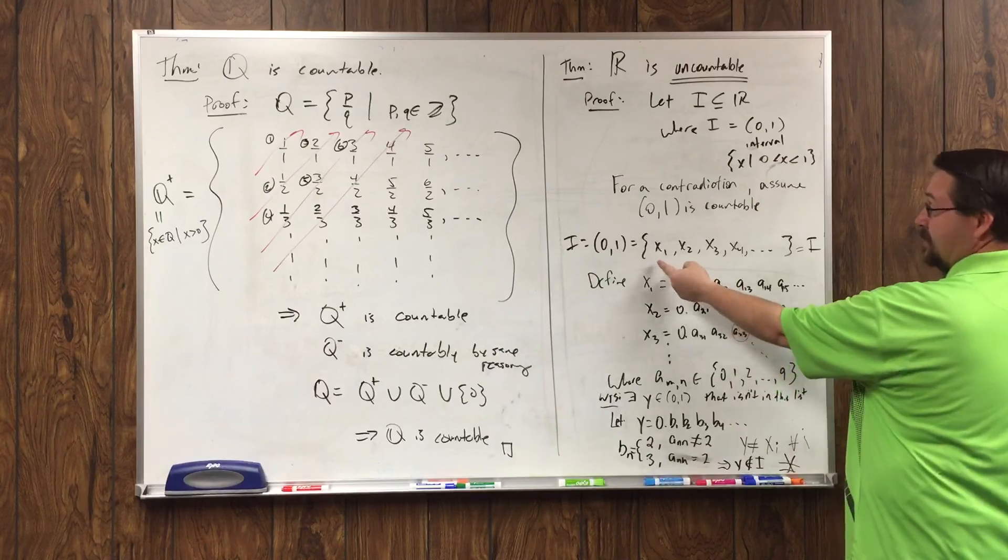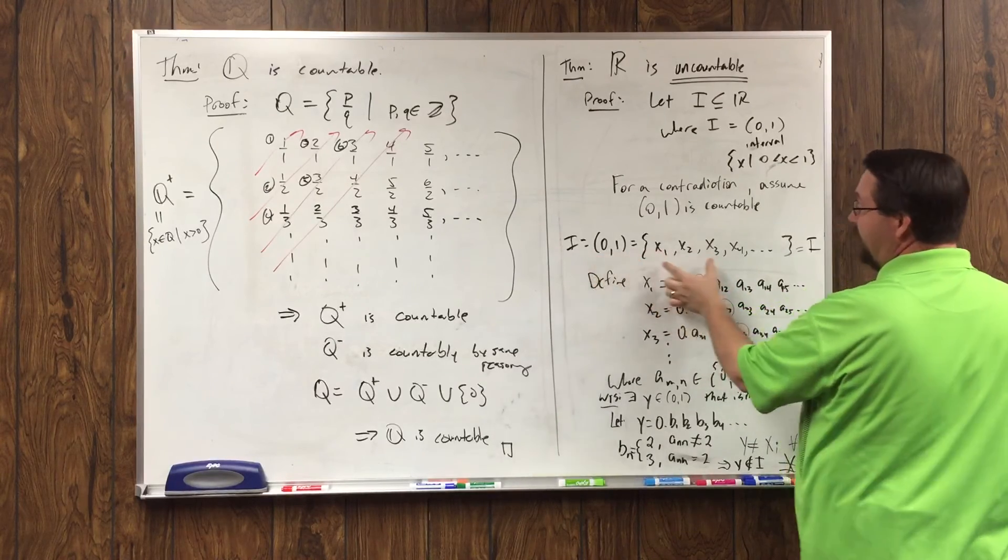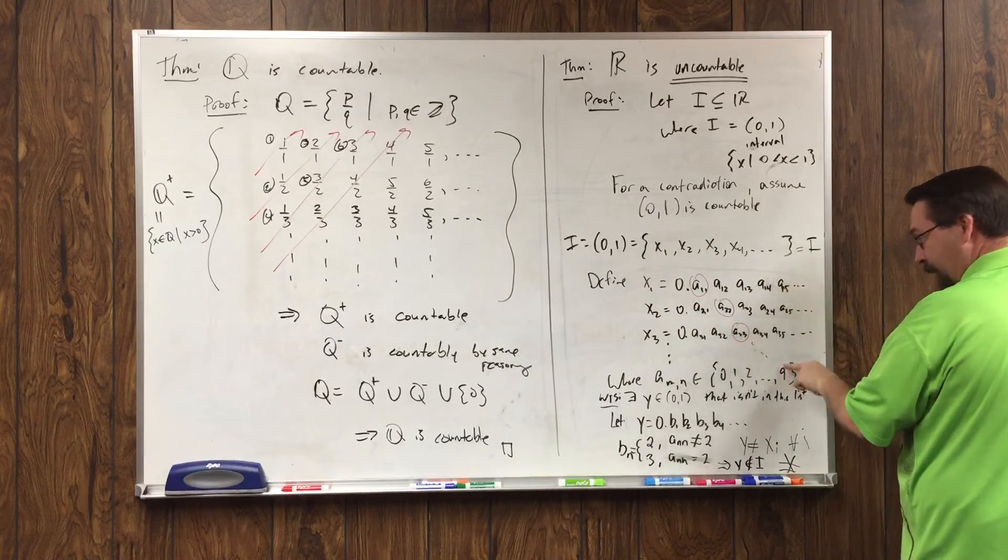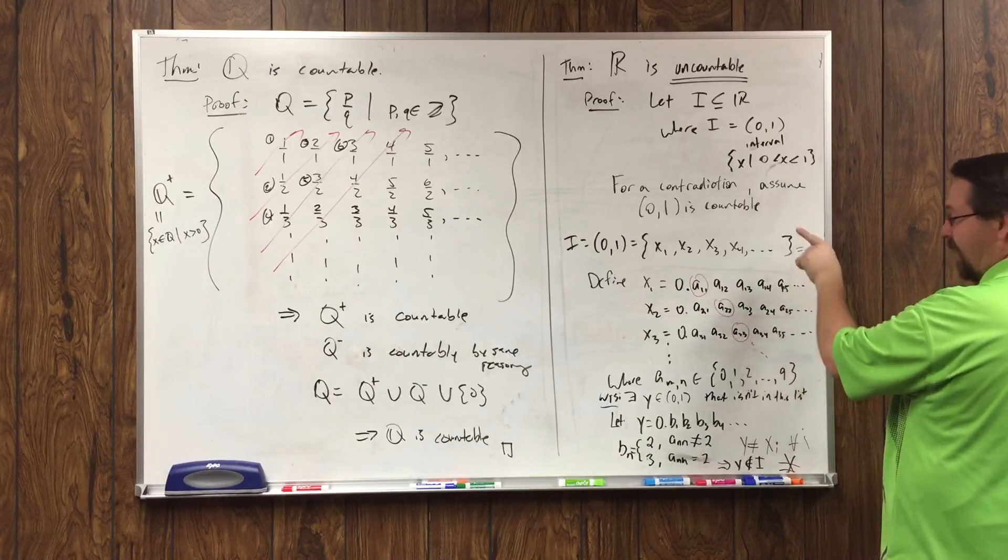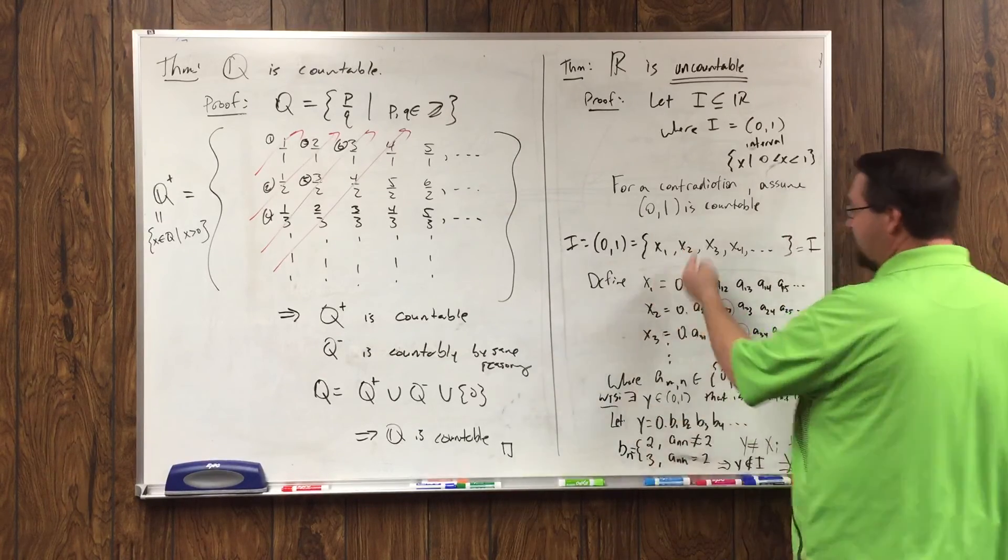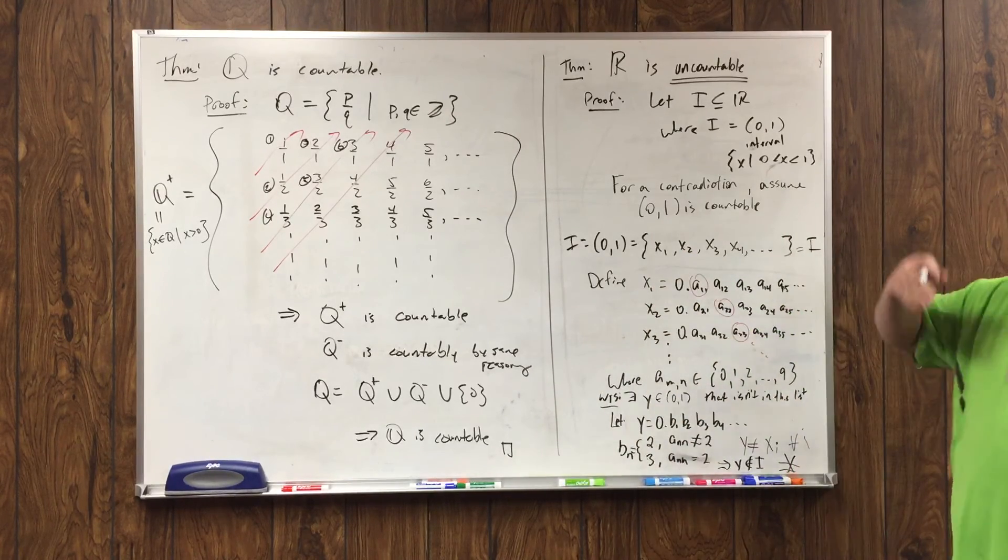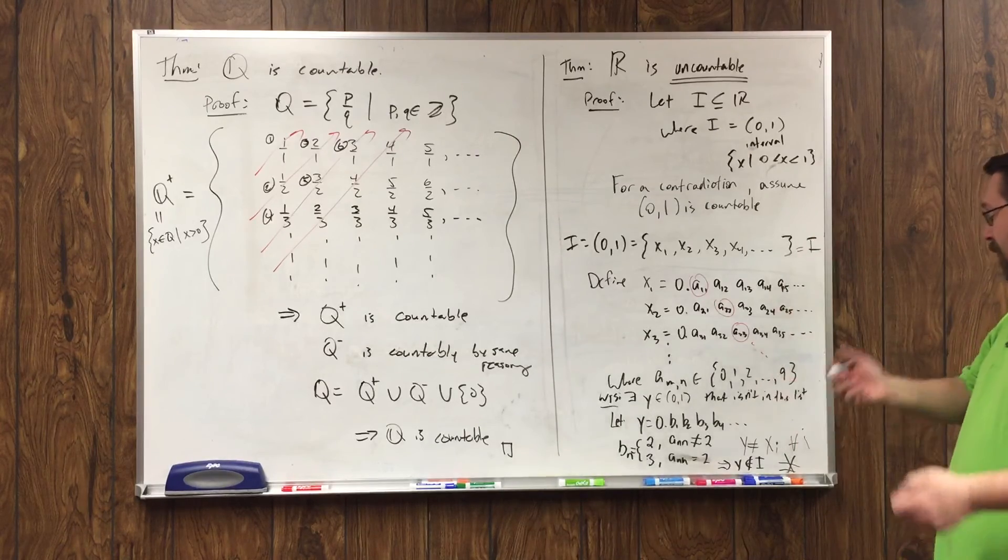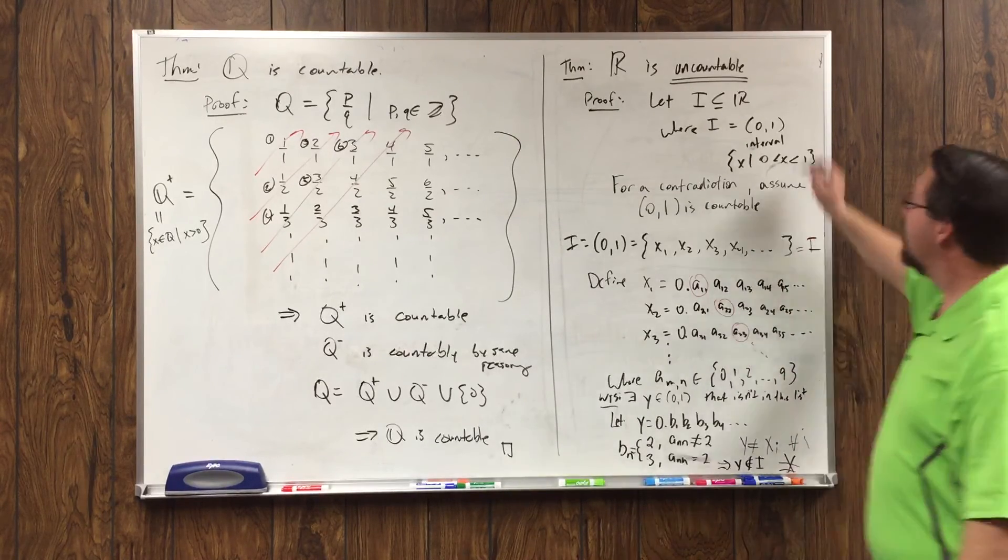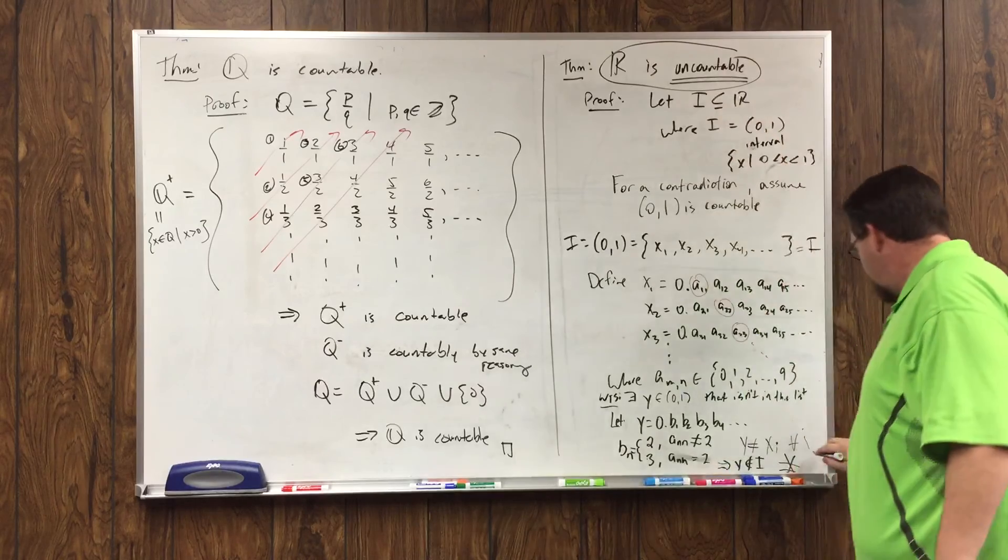Or that's i right there. It's in i because it's in this interval. But if I were able to list it, I would be able to do this. And since I'm able to do this, but I can find a y that's not in that list, then I can't list the reals. R is uncountable. Proved.